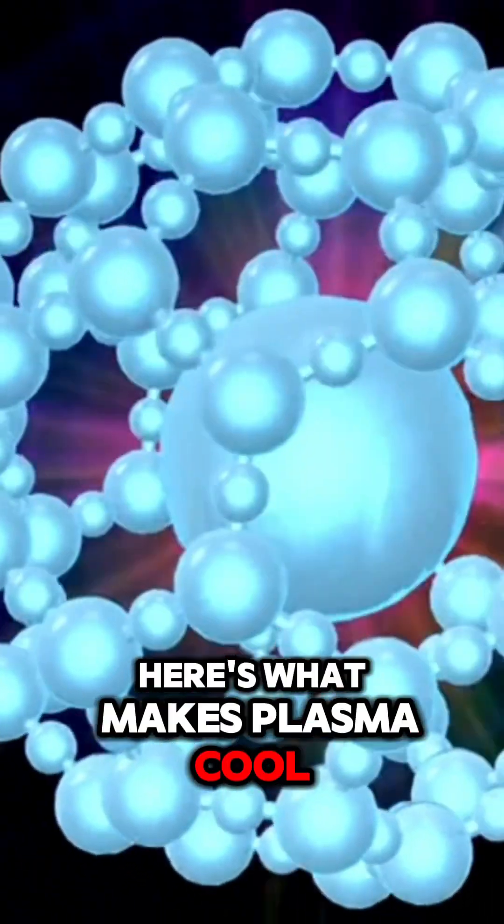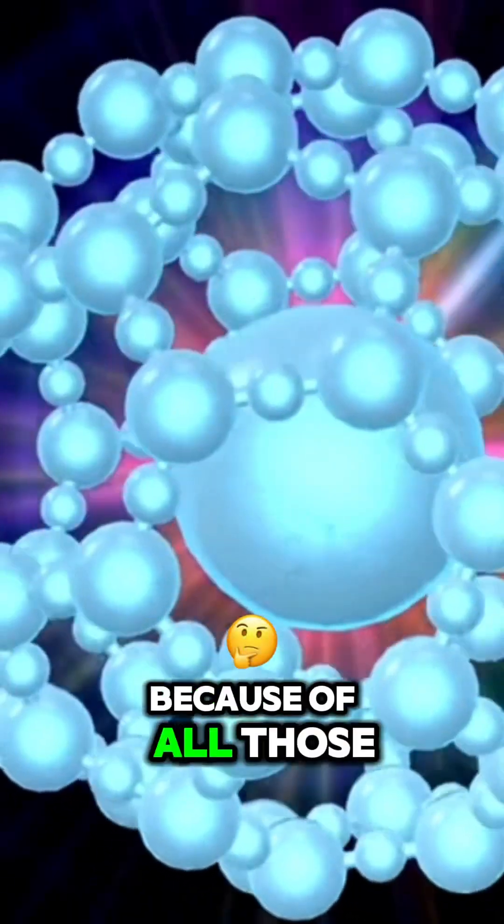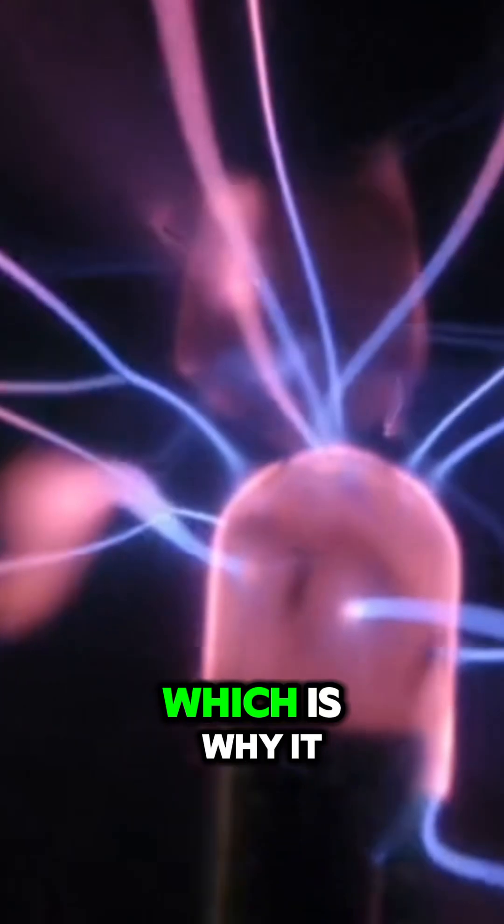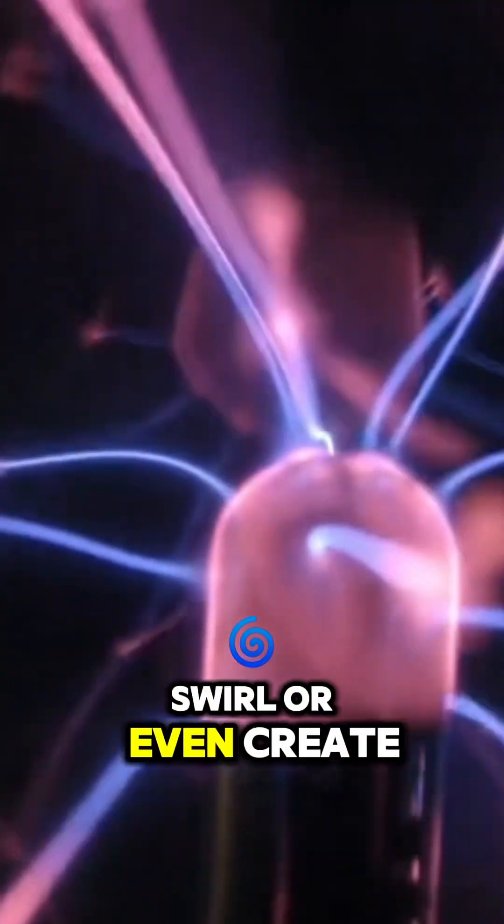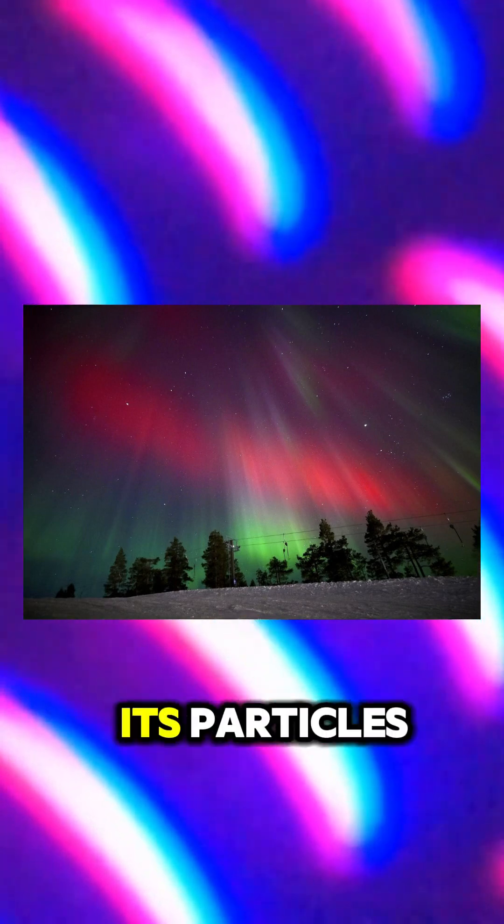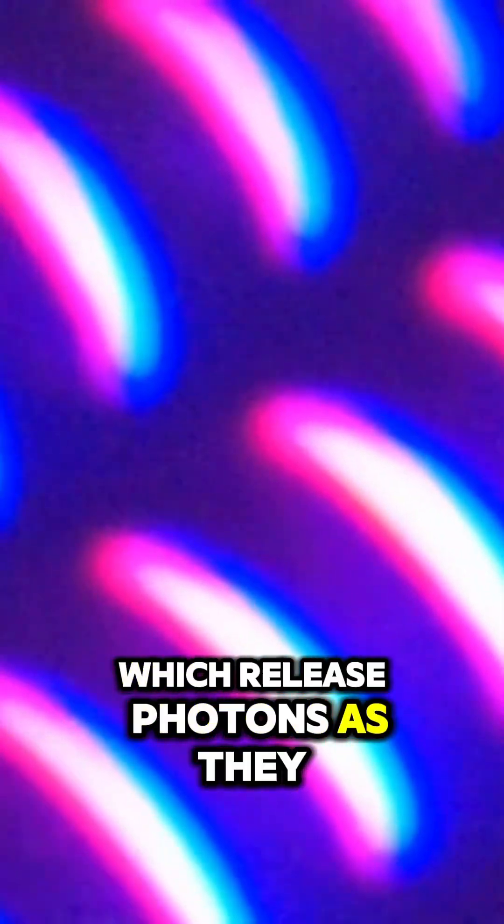Here's what makes plasma cool. It's an excellent conductor of electricity because of all those charged particles zipping around. It also reacts to magnetic fields, which is why it can twist, swirl, or even create glowing shapes, like the auroras, northern lights. Plasma often emits light because the energy excites its particles, which release photons as they settle down.